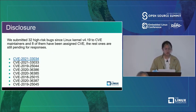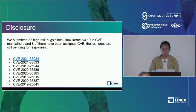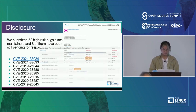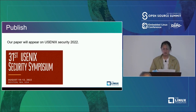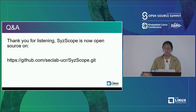We disclosed our findings to CVE maintainers, resulting in eight CVE assignments. We noticed that several vendors like Ubuntu and Fedora had ignored some high-risk bugs; after our CVE assignments, they found their kernels vulnerable and applied patches immediately. Our paper will appear at USENIX Security 2022 and is available for download online. Syscope is now open source on GitHub. I'm ready to answer any questions.